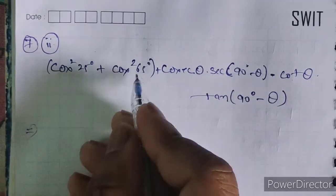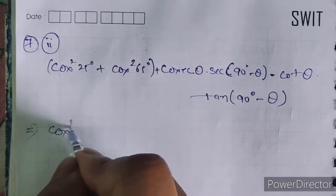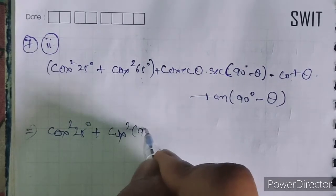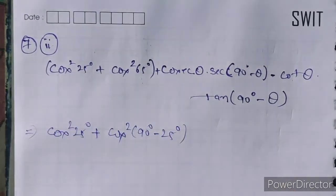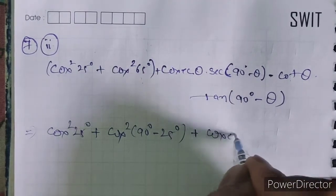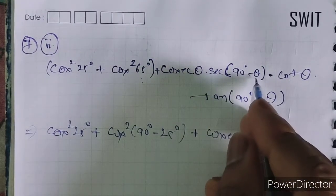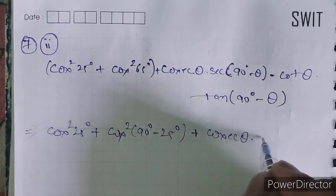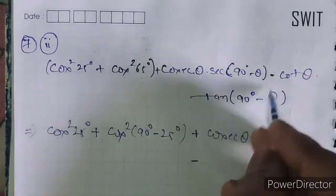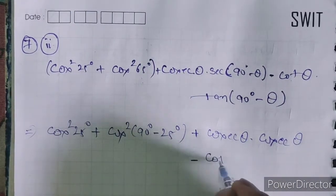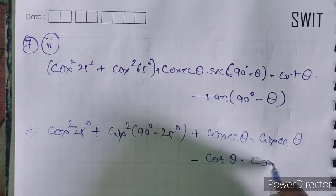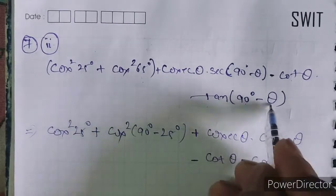We write cos square 65 as cos square(90-25) which becomes sin square 25. The term sec(90-theta) is cosec theta, so cos theta into cosec theta becomes cos theta times 1/sin theta. For tan(90-theta) = cot theta, so minus cot theta into cot theta becomes minus cot square theta.